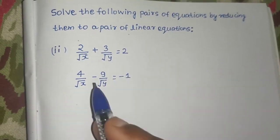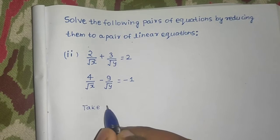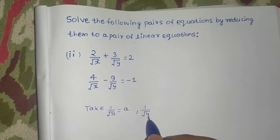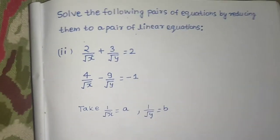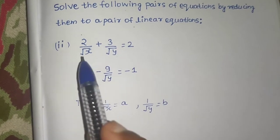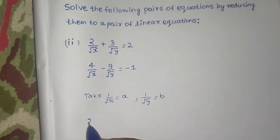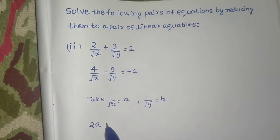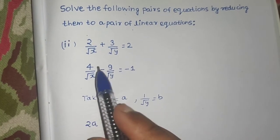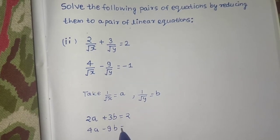You can see 1/√x and 1/√y appear in both equations. So let's take 1/√x as 'a' and 1/√y as 'b'. After this substitution, the equations transform: 2/√x becomes 2a, 3/√y becomes 3b, giving 2a + 3b = 2 as the first equation. And 4/√x is 4a, so the second equation becomes 4a − 9b = −1.